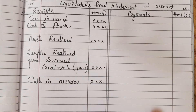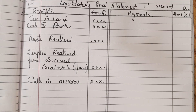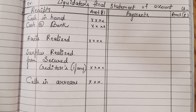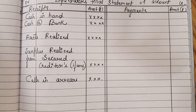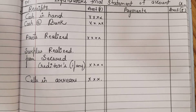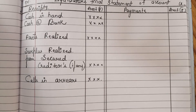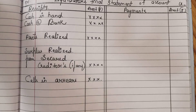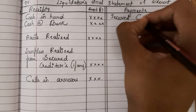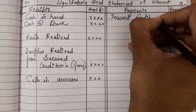Now, very important is the credit side. The Companies Act of 2013 has told us in which order we need to distribute or pay the amount to creditors or liability holders of the company when the company has been liquidated. First, we always need to pay secured creditors.